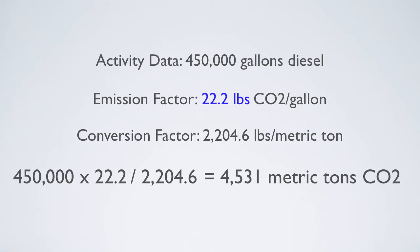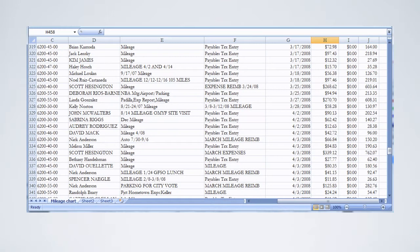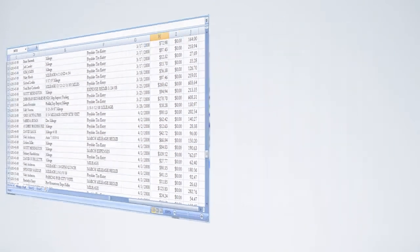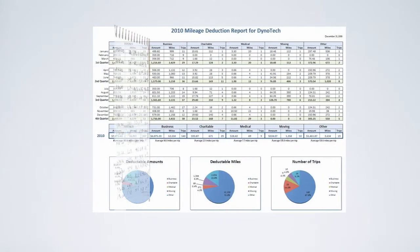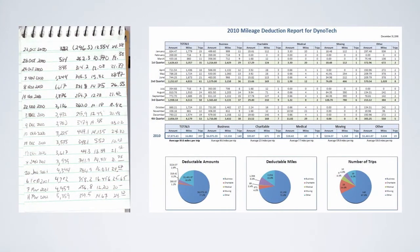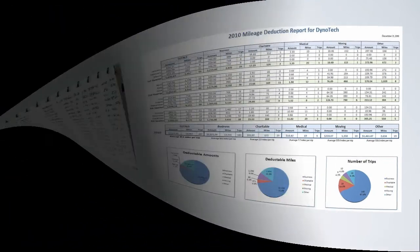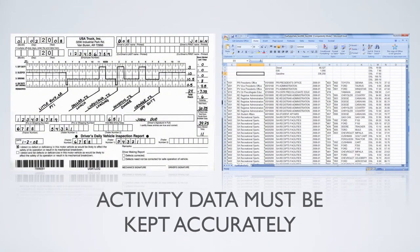One of the most important things to note about calculating greenhouse gas emissions is that collecting activity data will most likely be the most difficult and time-consuming part of the task. Collecting receipts, invoices, mileage logs, and fuel consumption tables can be quite an undertaking, so it is important to design a system which tracks the individual records precisely.